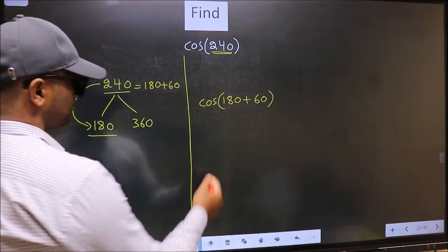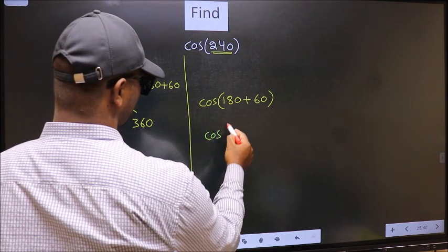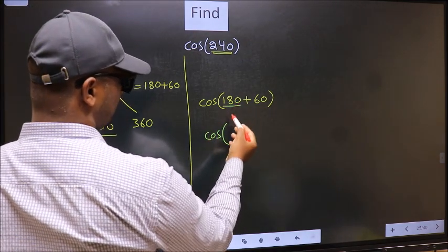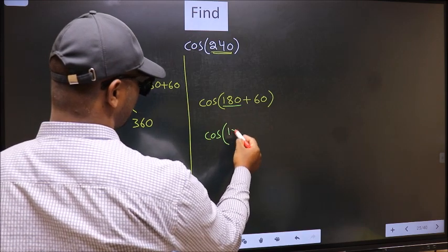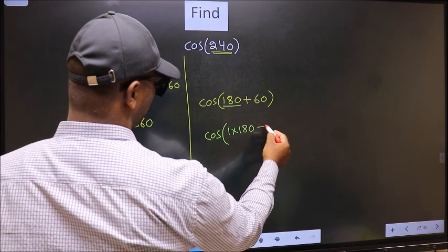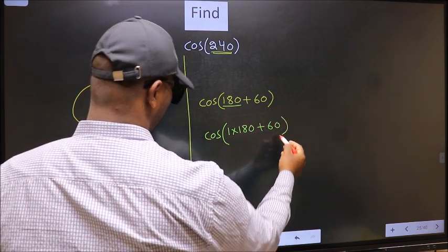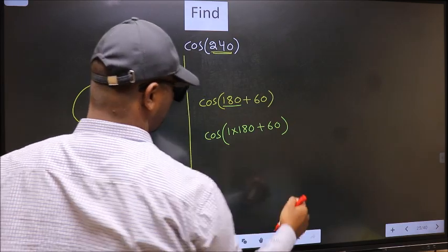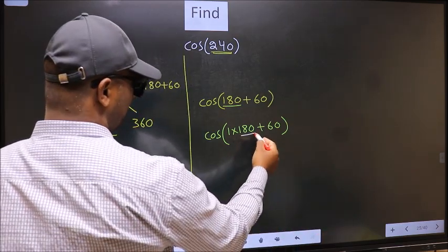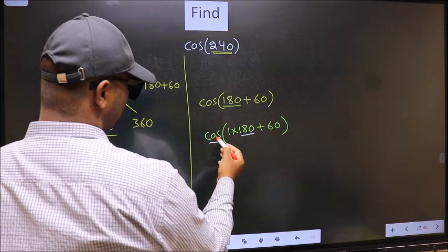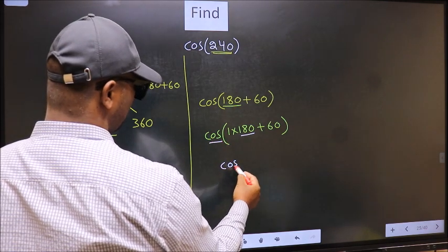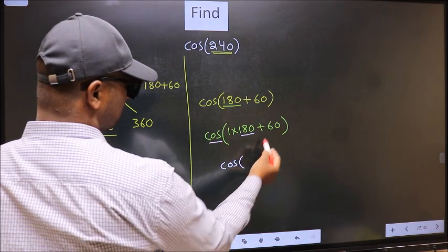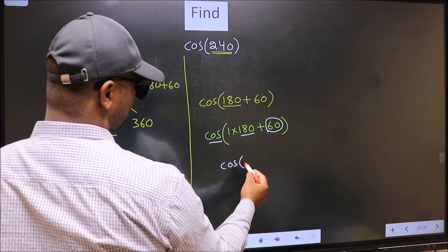Next, cos. In place of 180, now we should write 1 times 180 plus 60. Next, here we have 180. So cos is not going to change. It will remain cos. And inside, we get this angle 60.